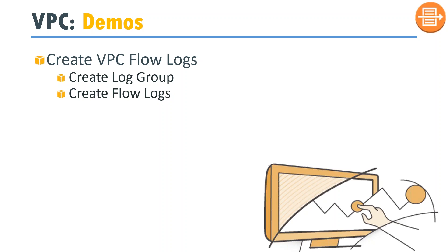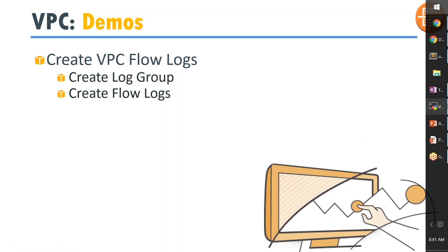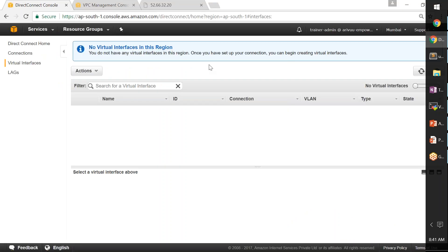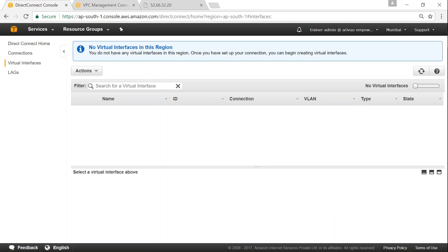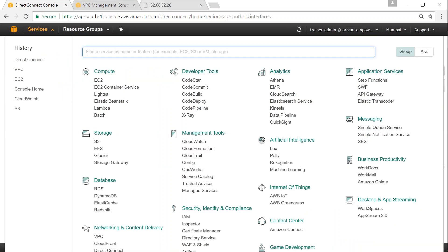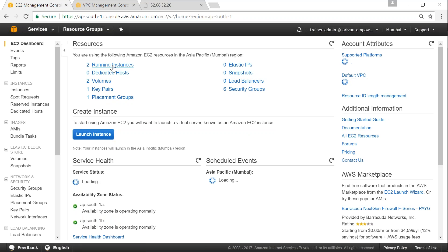Here is what we are going to do as a demo: we are going to create a log group, create flow logs, and try to access our server or hit it as many times as possible so that our logs are captured and we can visualize them. Before going to the VPC dashboard, I am going to create one more server in one of my VPCs with a web server so that we can access it from the internet — in other words, we are trying to generate some traffic.